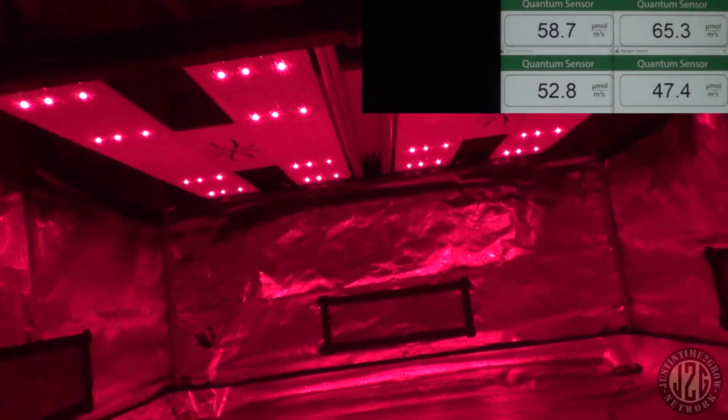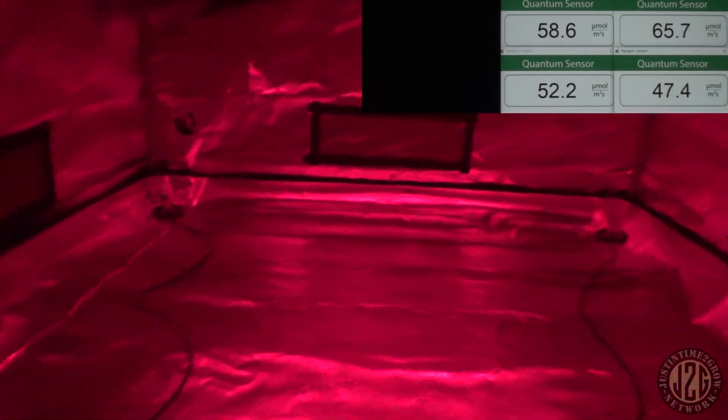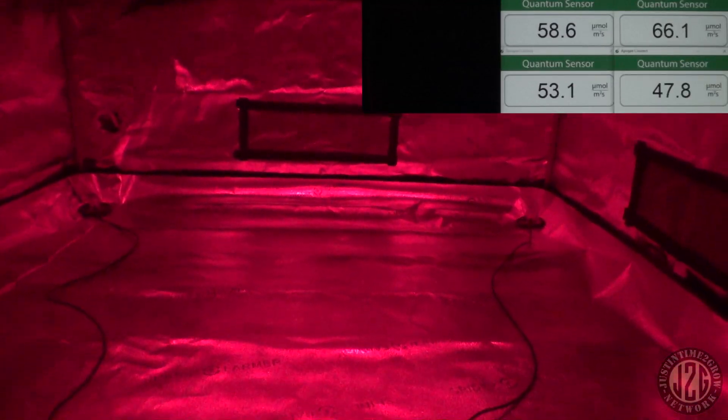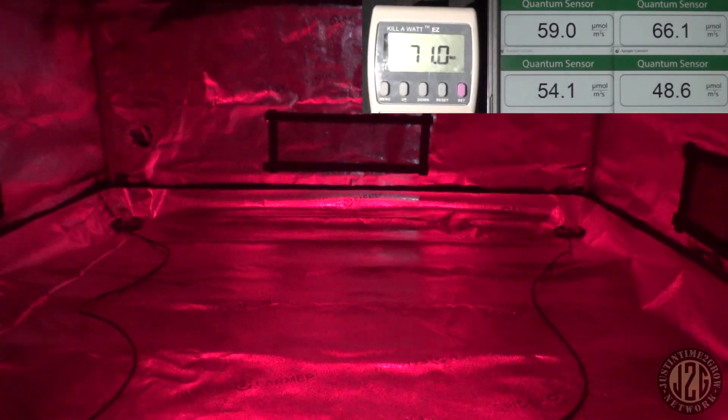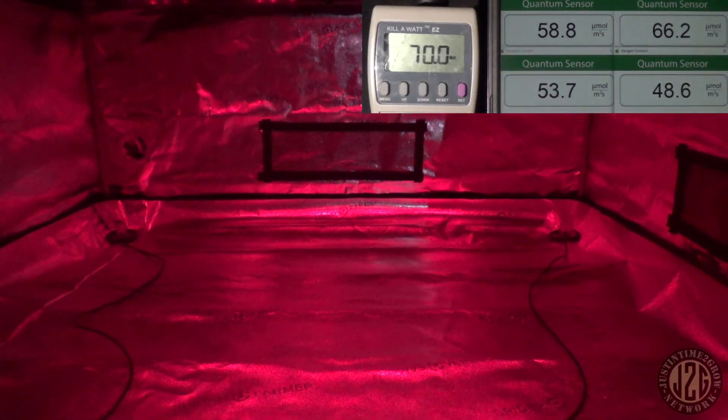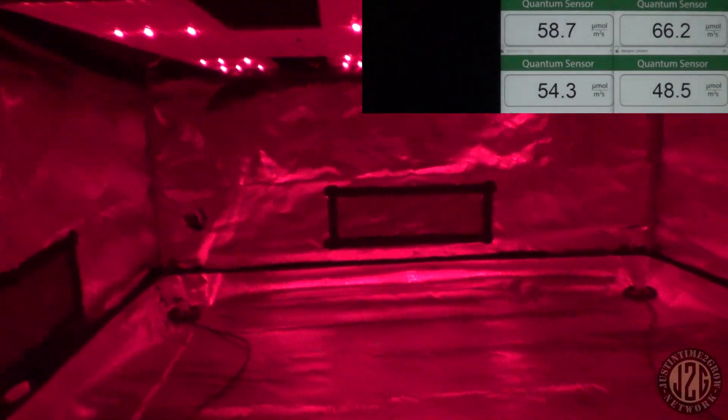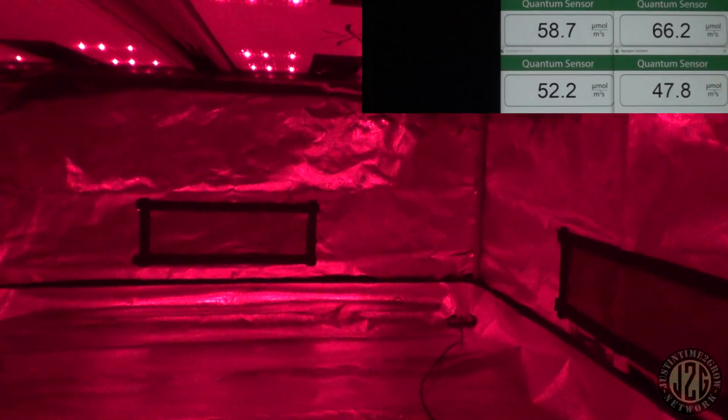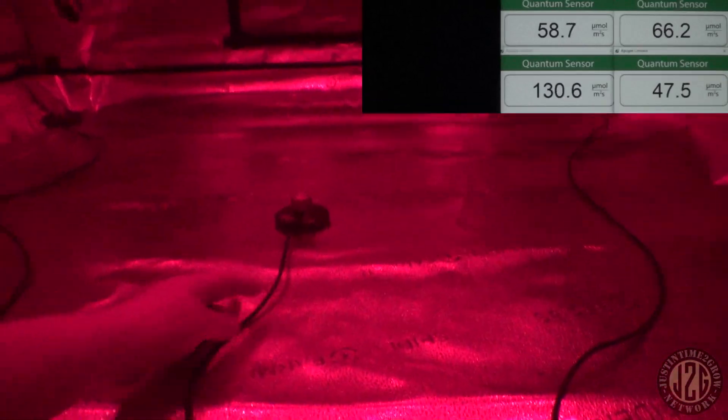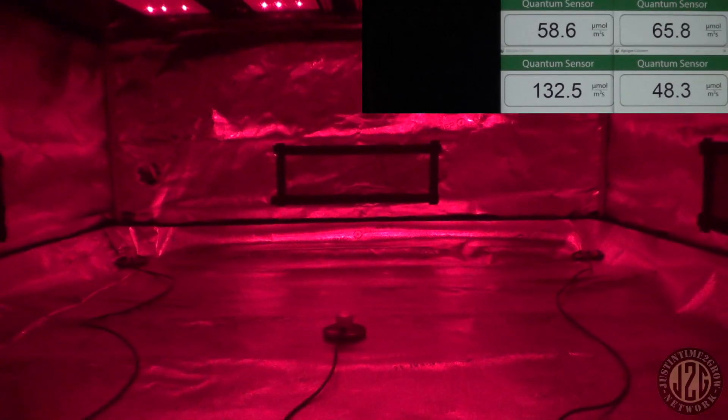Now we're just looking at the red only. That looks pretty sick. Let's see what we're pushing here - about 50 PAR, 60 PAR to the corners. See the wattage - 71, 70, 71 watts looking at there. So that's about what we're pushing if you just wanted to run just straight red. Let's take a look at the center here real quick.